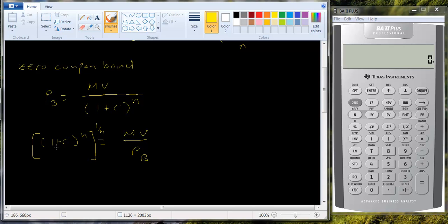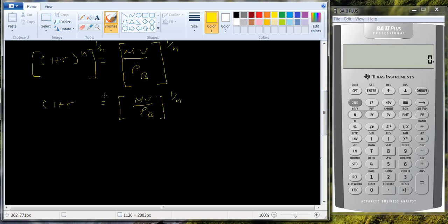That will be, for example, if you squared the number and then you took the square root, you'd just have the number. Anything you do to one side of the equation, you have to do to the other side. So raise this to the 1 over n power. That disappears. And so we get 1 plus r equals MV, maturity value over the price of the bond, raised to the 1 over n power. So r is going to be equal to maturity value over the price of the bond raised to the 1 over n power minus 1.